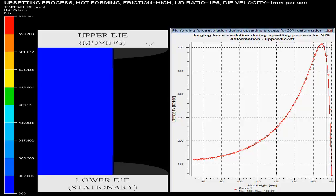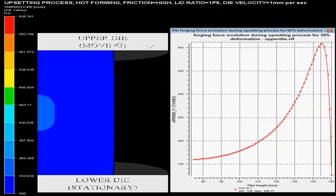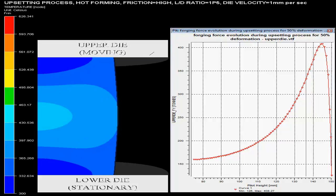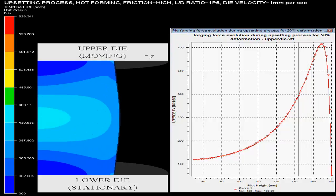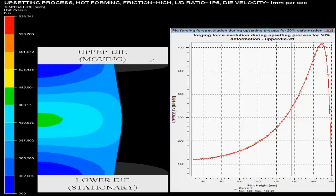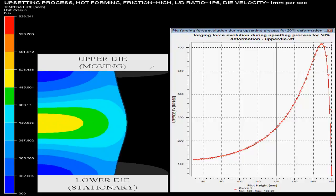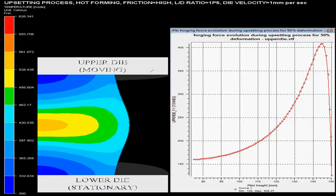Here this metal forming simulation is depicting upsetting process. Upsetting is a process in which metal is plastically deformed and it is an open die forging process. This process is extensively used for shaping oversize billets by compressing them.